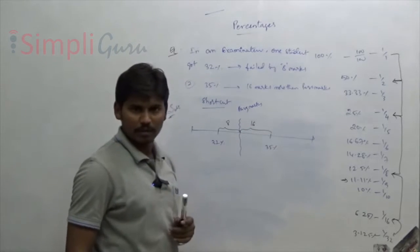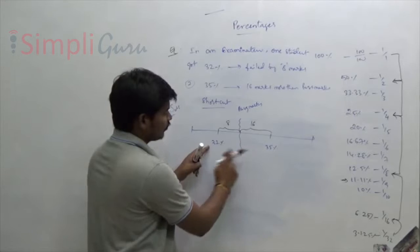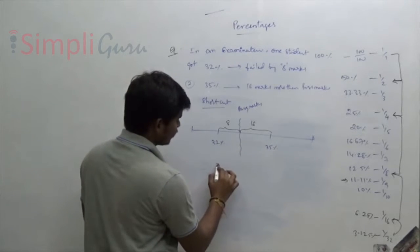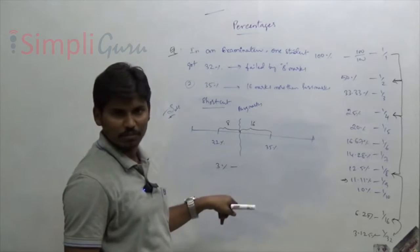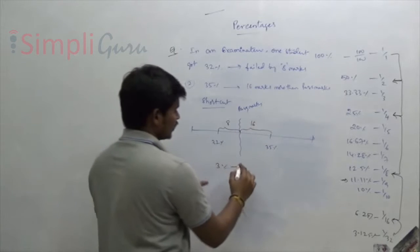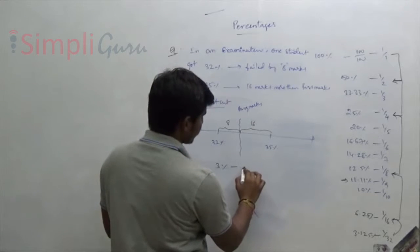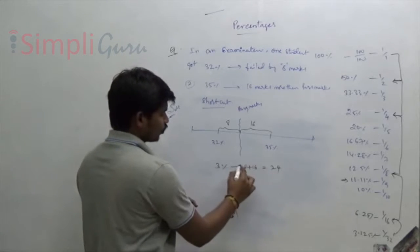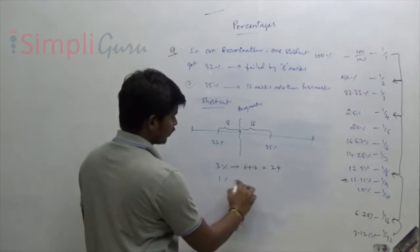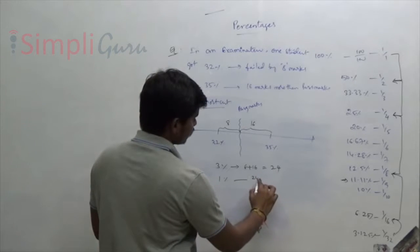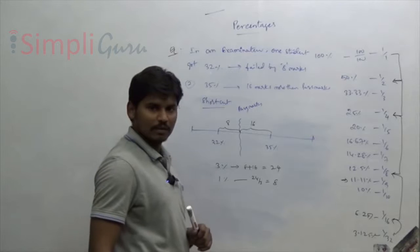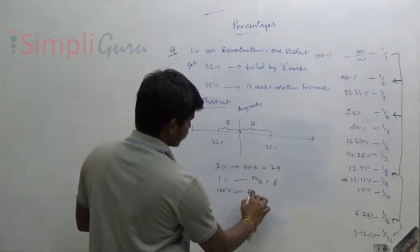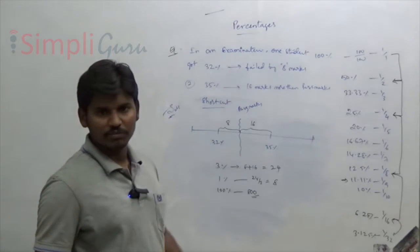From 32% to 35% the percentage difference is 3%. In terms of marks, the difference is 8 + 16 = 24 marks. So 3% = 24 marks, meaning 1% = 24/3 = 8 marks.